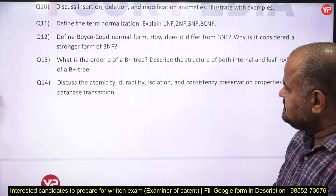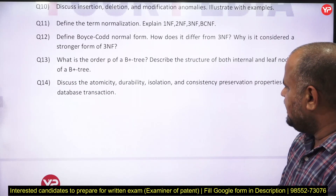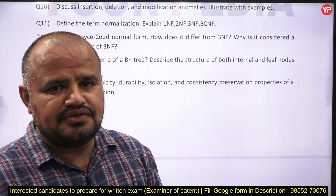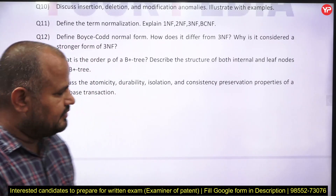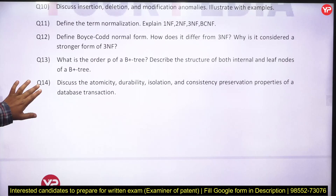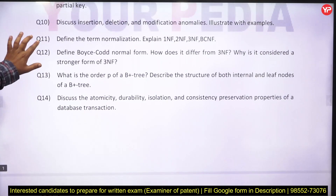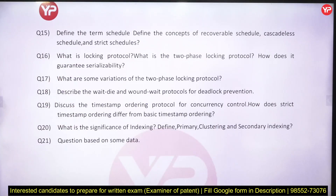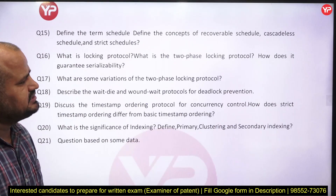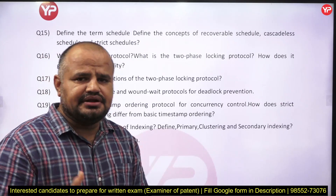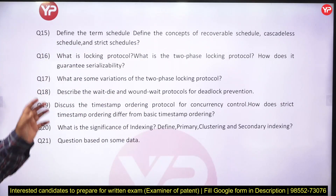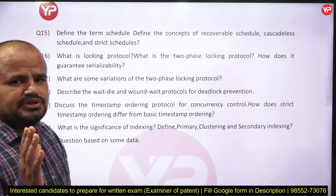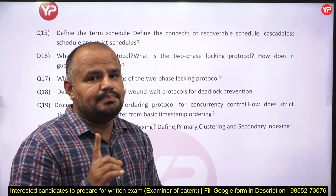Next, discuss atomicity, durability, isolation and consistency. We know that for a transaction, we have four standard properties called ACID properties, so you may face a problem on that — and again, this is a most important problem like normalization. Next, define the term schedule and define the concept of recoverability, cascadeless, and strict recoverable schedule. Next, on the basis of locking protocol: what do you mean by locking protocol? The most important protocol is 2PL, so expect questions from the two-phase locking protocol.